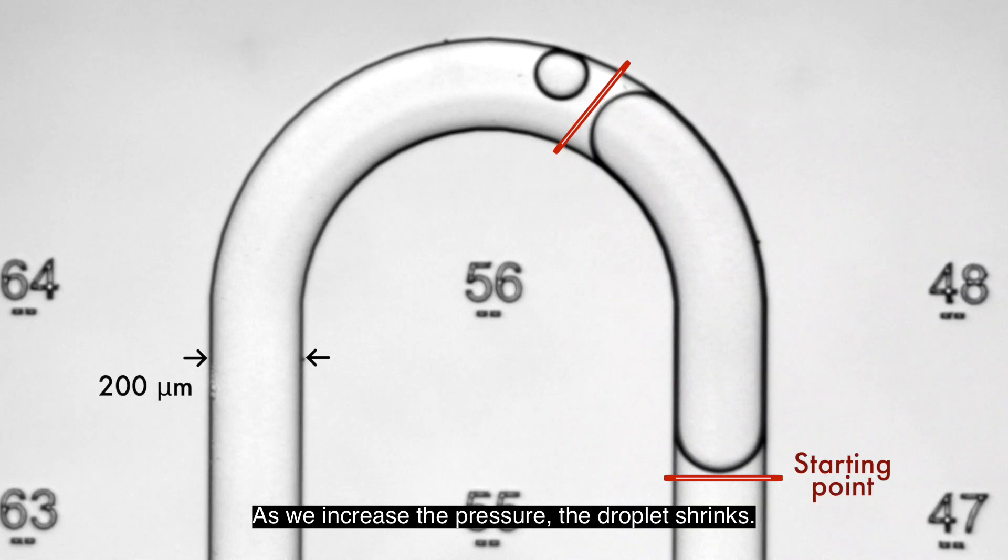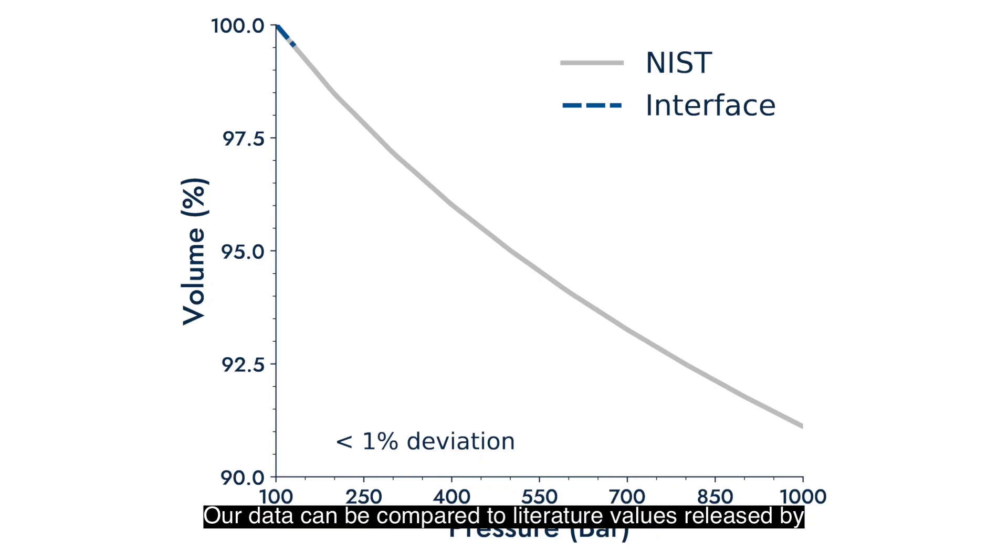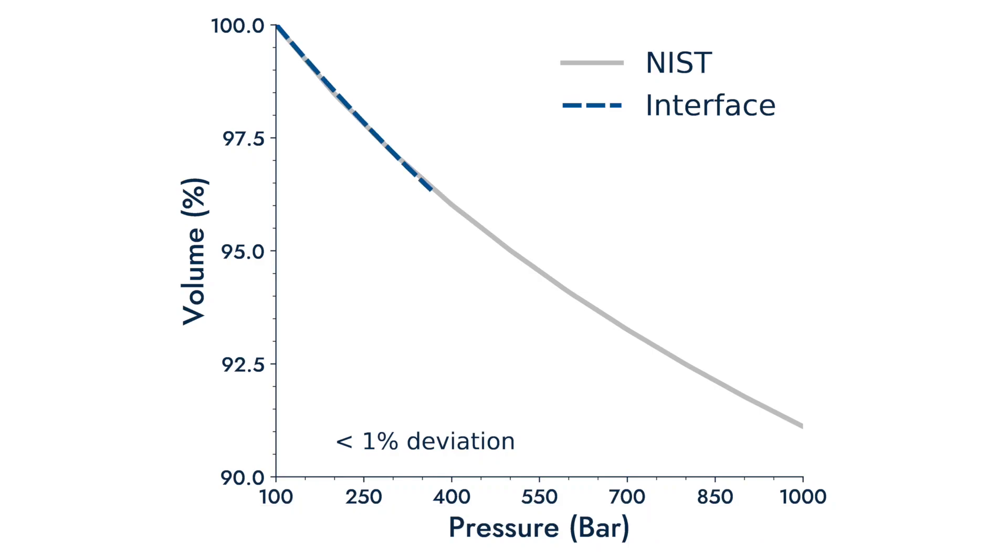As we increase the pressure, the droplet shrinks. Our data can be compared to literature values released by the National Institute of Standards and Technology. This plot shows the values obtained with Interface's system against the accepted values.